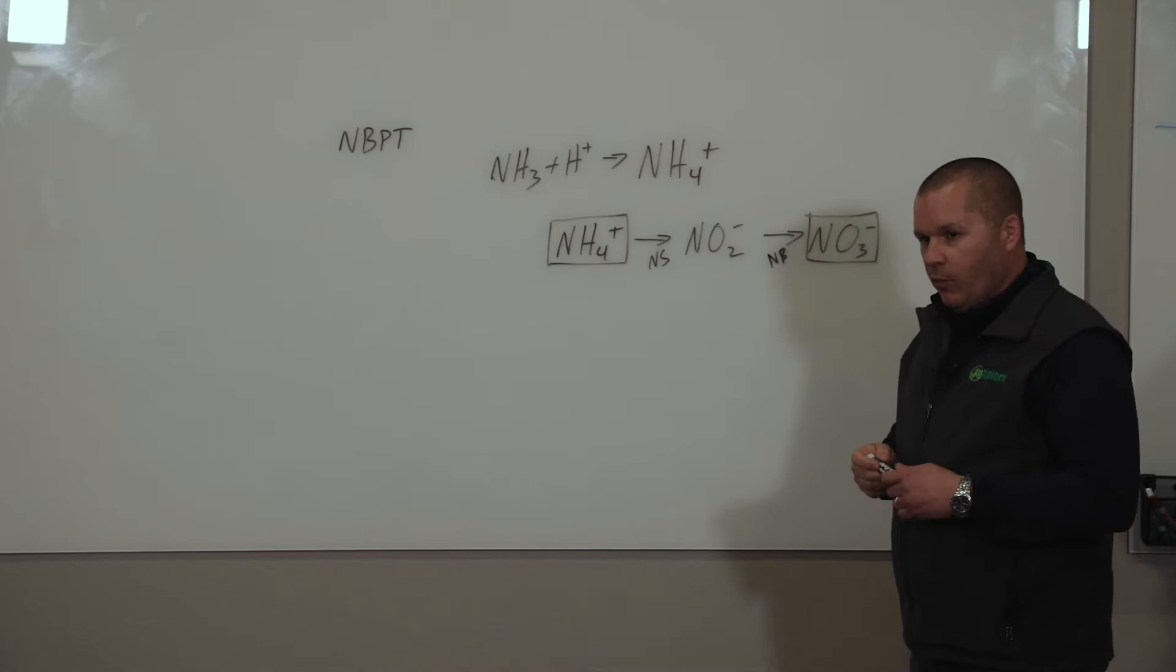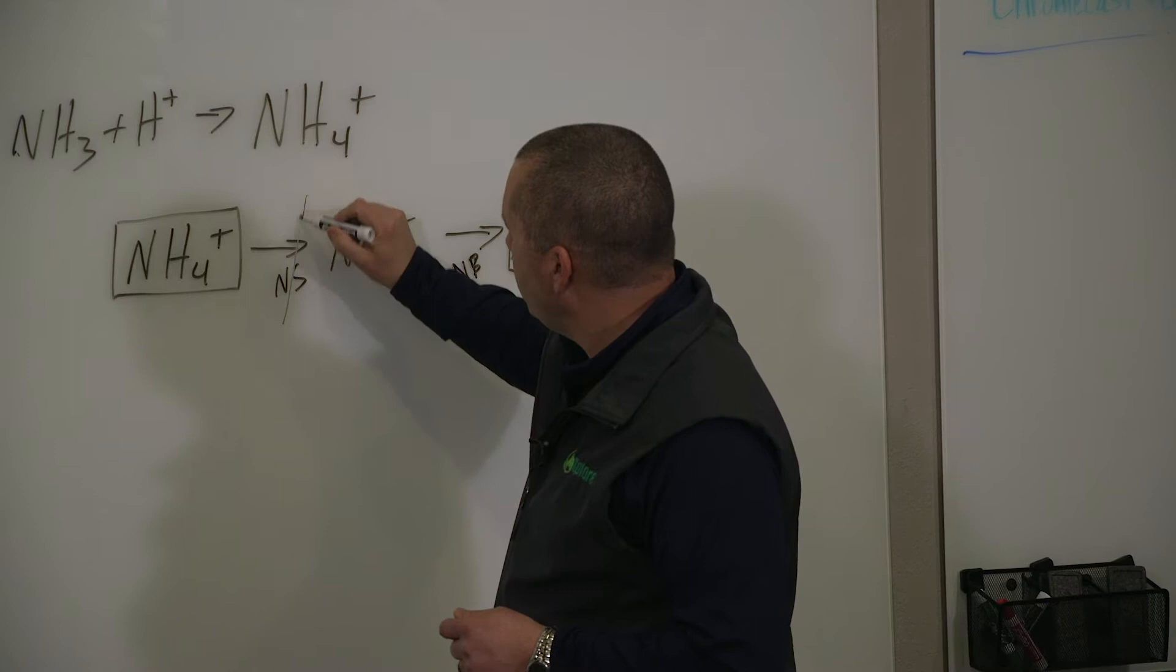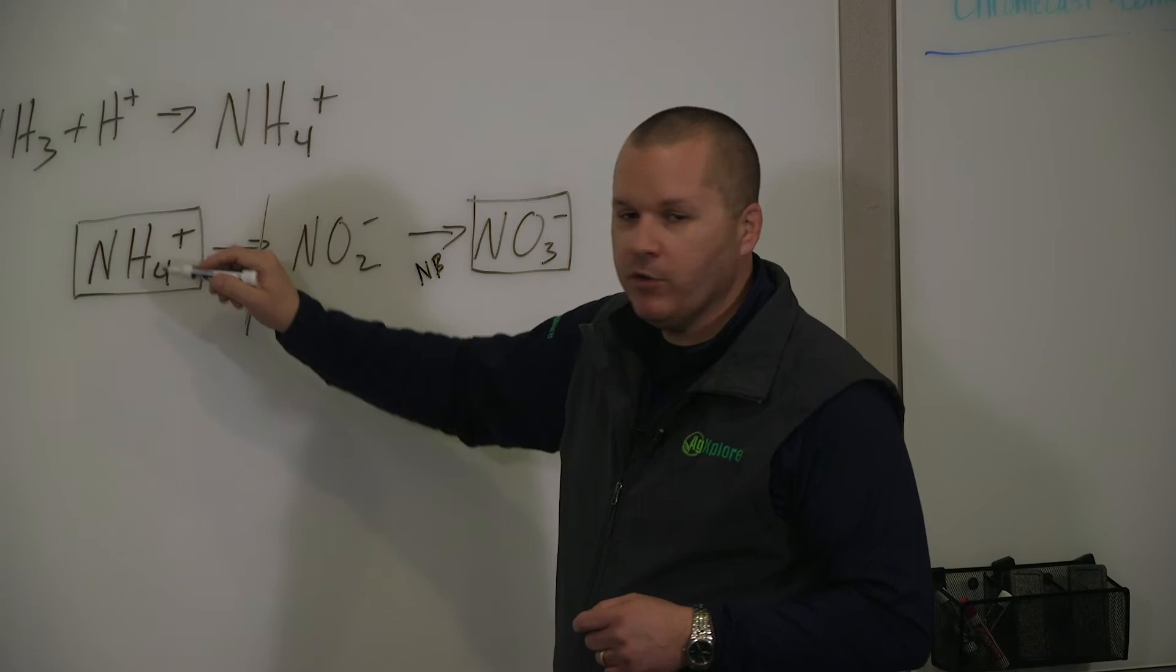What happens with nitropyrin and DCD is they work on this step right here. And they work to inhibit or kill bacteria and slow down this process to keep ammonium in the plant available form.